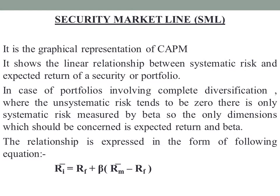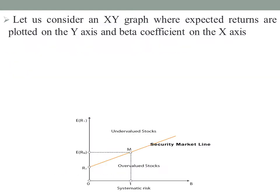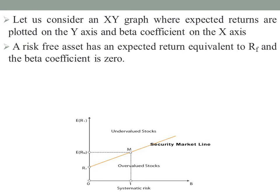Let us consider an XY graph where the expected returns are plotted on the Y-axis and the beta coefficient on the X-axis. A risk-free asset has an expected return equivalent to rf and the beta coefficient is 0. So for the risk-free asset, the expected return equals rf and the beta coefficient equals 0.